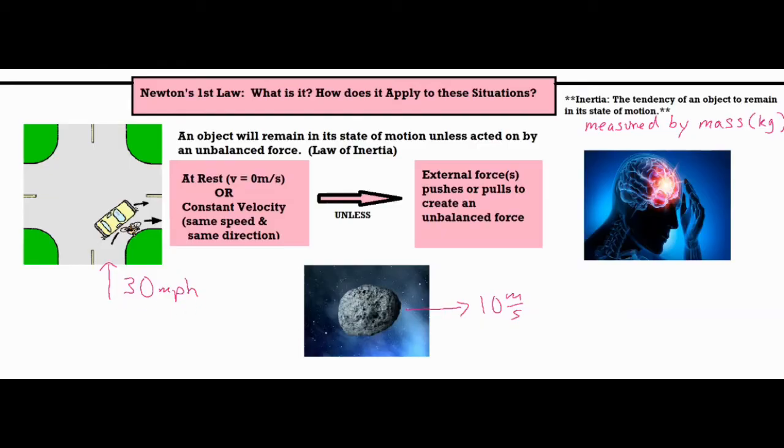But what you're actually doing, just like the car, is you're moving in a straight line at 30 miles per hour. Because you're not rigidly connected inside the car, when it turns you continue in your state of motion, which is a constant velocity of 30 miles per hour in a straight line.